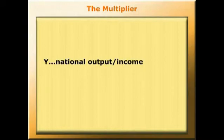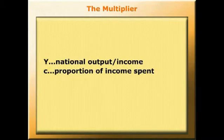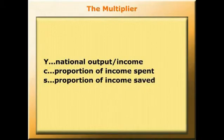Second thing we need to be clear about is that all income of households is either spent or saved. So if we call the proportion of household income spent, little c, and the proportion of household income saved, little s, then c plus s must equal 1.